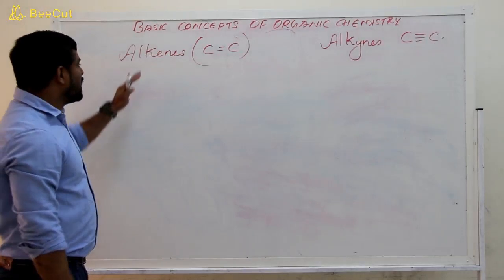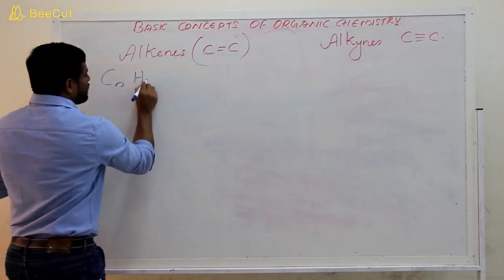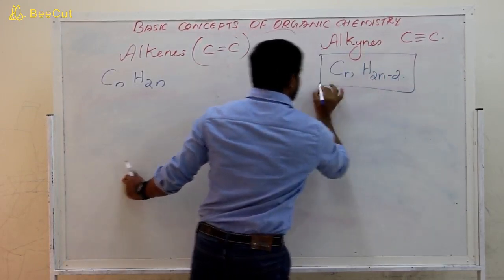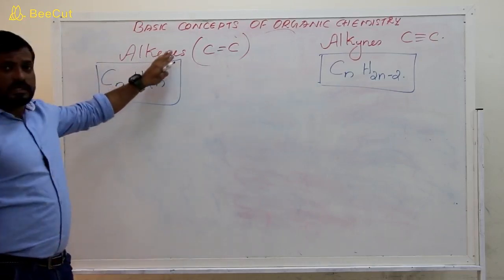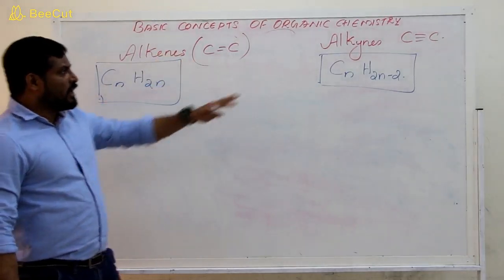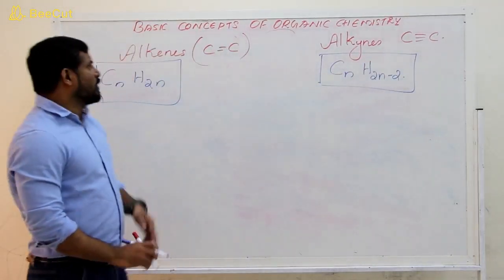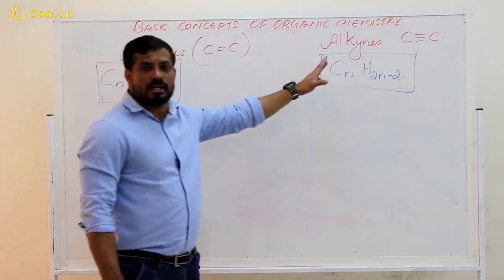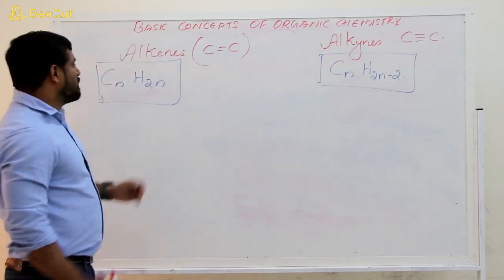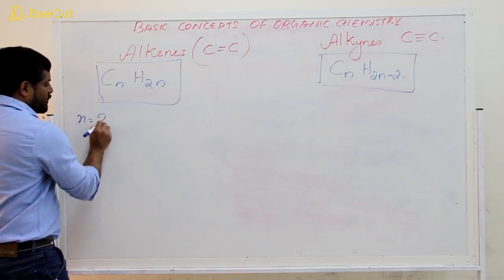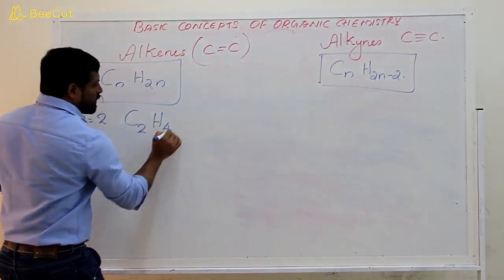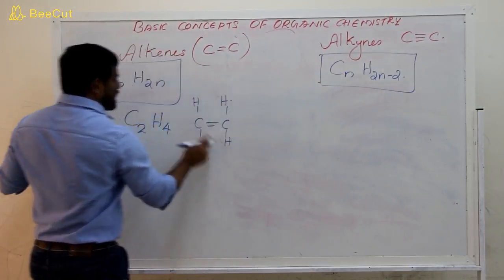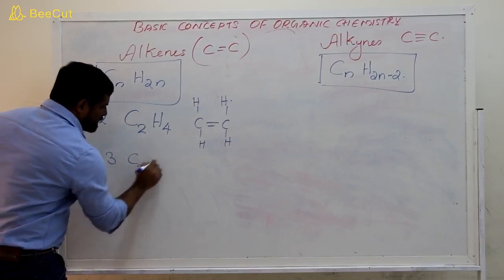Alkenes possess the general formula CnH2n. Alkynes possess the general formula CnH2n−2. Alkenes are hydrocarbons which contain carbon-carbon double bonds, and alkynes are hydrocarbons which contain carbon-carbon triple bonds. In both cases, the value of N equals 1 is not acceptable because they must possess multiple bonds. So the first compound starts at N equals 2: for alkenes, N=2 gives C2H4; N=3 gives C3H6.